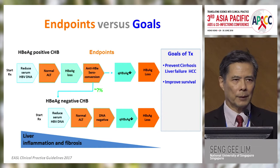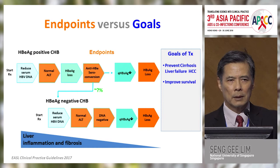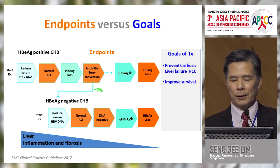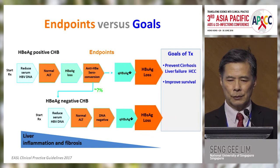Let's talk about endpoints versus goals. The goals of therapy for hepatitis B are really improving survival and reducing complications such as cirrhosis, liver cancer, and HCC. But those goals take a long time to be achieved, so we need endpoints along the way — shown here in orange — such as normalization of ALT, e-antigen seroconversion, and s-antigen loss, to indicate that we're on the way to achieving these goals.